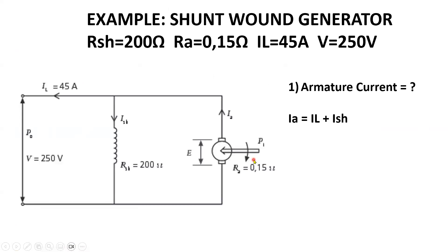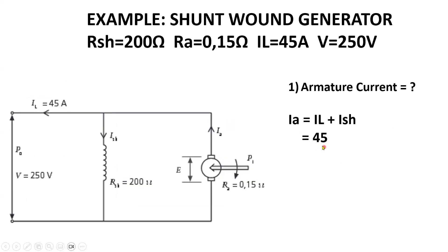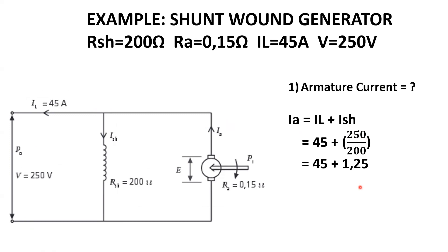In this example we have a shunt-wound generator with a shunt resistance of 200 ohms, an armature resistance of 0.15 ohms, a supply current to the load of 45 amps, and a terminal voltage of 250 volts. To calculate the armature current, IA equals IL plus I-shunt. The shunt current is the terminal voltage of 250 volts divided by the shunt resistance of 200 ohms. Note that the terminal voltage equals the voltage across the field winding since they are in parallel. Therefore the armature current is 45 plus 1.25, giving 46.25 amps.